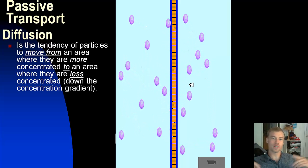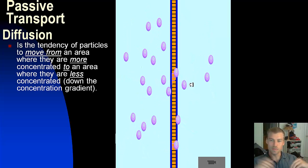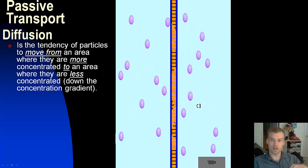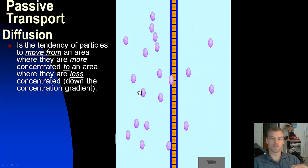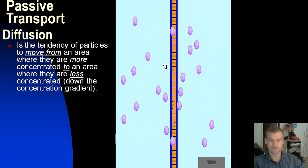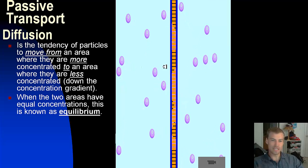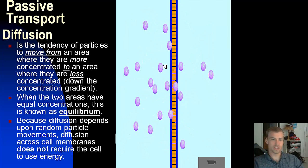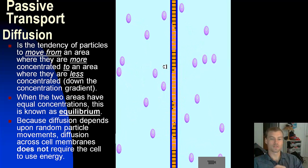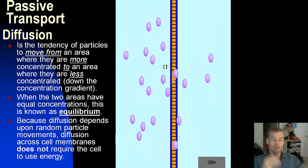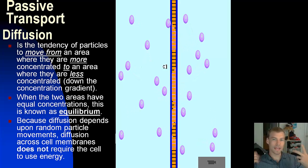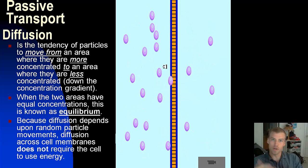Once you've reached equilibrium, it doesn't mean particles stop moving — they continue to move back and forth across both sides, but at an equal rate. We call that equilibrium: two equal concentrations. Diffusion depends upon random particle movement and does not require energy, because particles and molecules automatically move around on their own.